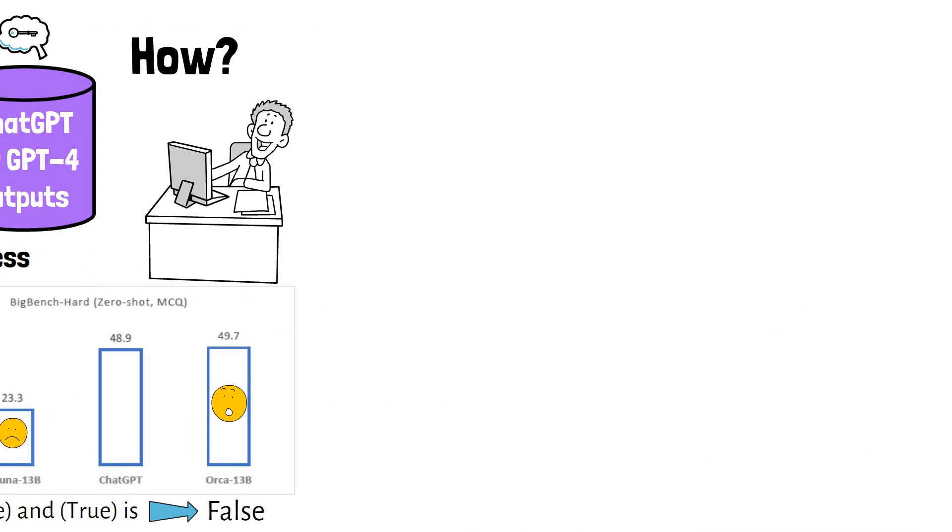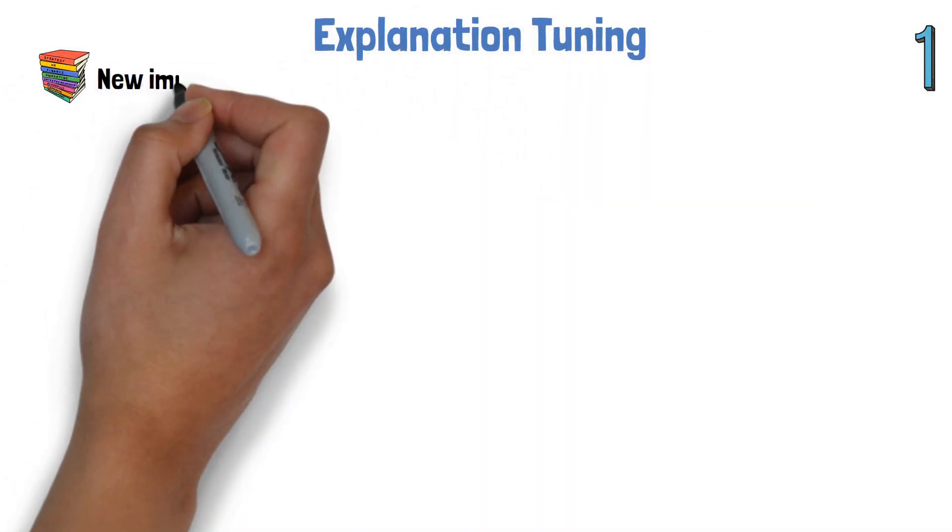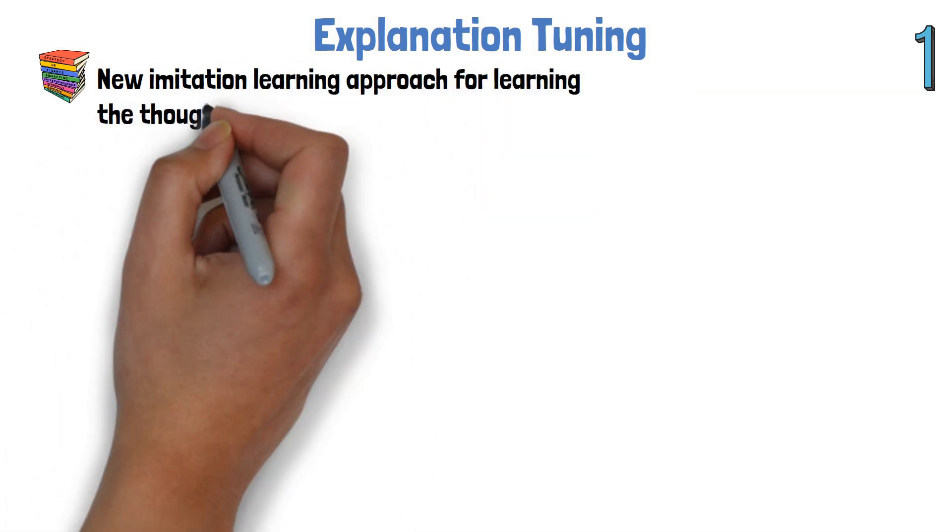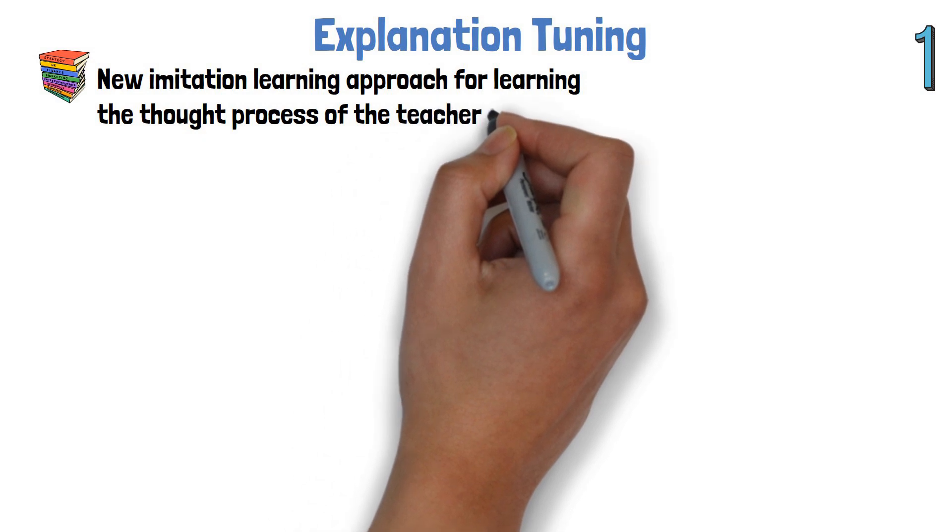So let's talk about how they did that. The first factor for this improvement is called explanation tuning, a new approach for imitation learning presented in the paper that is meant to allow the model to learn the thought process of the teacher model like ChatGPT.